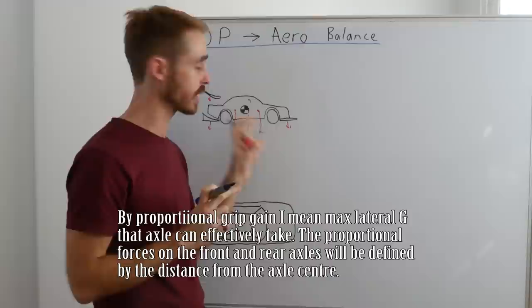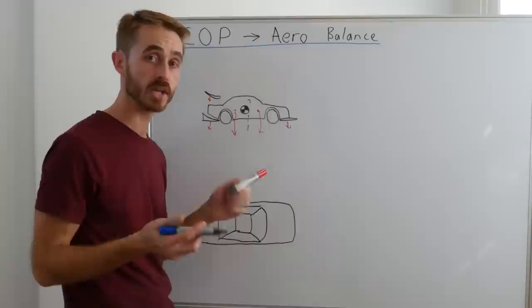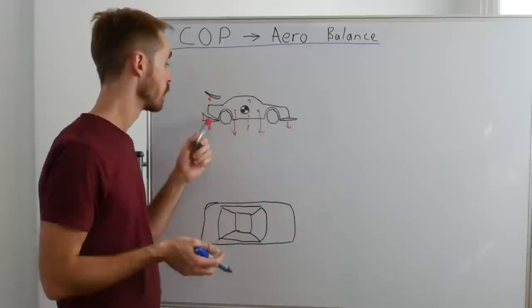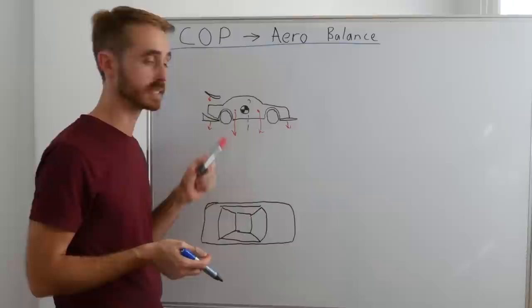To move the center of pressure, we can adjust our different aerodynamic elements. To move it rearwards, we can apply more rear wing. To move it forwards, we can apply more front diffuser or fit a larger splitter. We can also change out our rear diffuser, which will change how the front operates, as well as providing different kick line downforce at the rear of the diffuser. So these are just a few ways in which we can change our center of pressure.